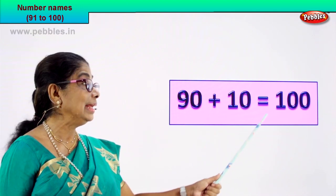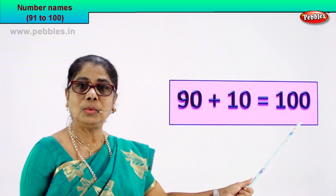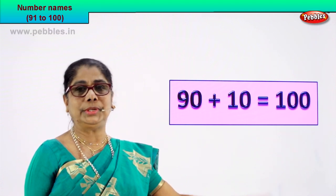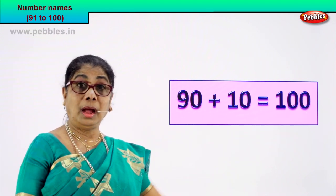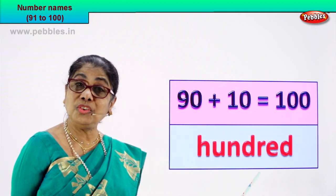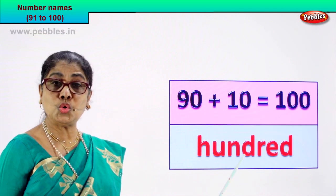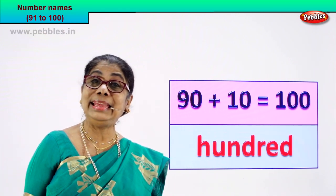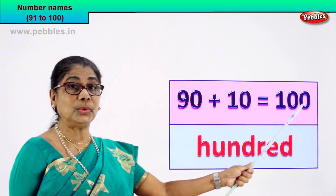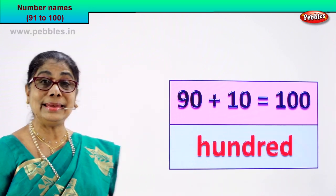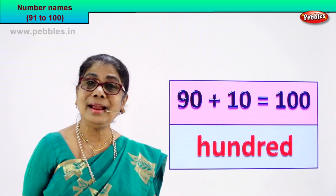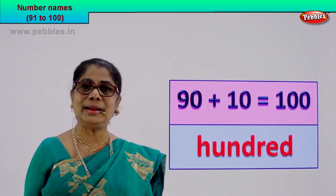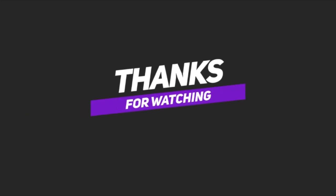90 plus 10 is equal to 100. What is 100? 1-0-0. How do we write the spelling? H-U-N-D-R-E-D — hundred. This is 100 and that number's name is H-U-N-D-R-E-D — hundred. Very good! Did you enjoy learning it? Thank you!